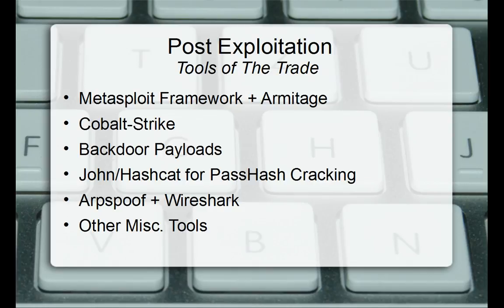Tools for post-exploitation: Metasploit Framework plus Armitage, or Cobalt Strike if you have the capital. You'll be using backdoor payloads — some are inside Metasploit Framework and Armitage will automatically compile and fire them against a target. You'll also be using John the Ripper and Hashcat for password hash cracking. Once you can escalate privileges enough to get the encrypted password hash file for Windows and Unix systems, you download that to your machine and crack those passwords at your leisure.